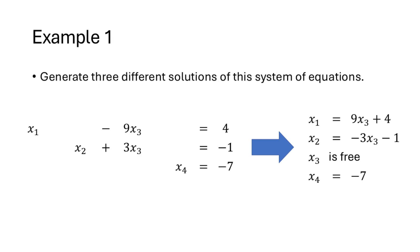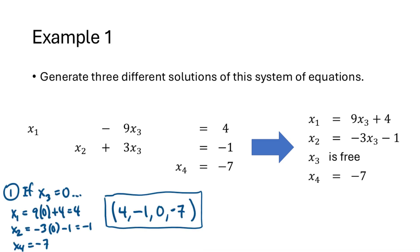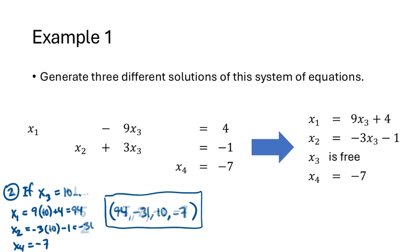Now we can use this general solution to generate specific solutions of the original system of equations. For example, if we choose x3 equals 0, then this generates the solution (4, -1, 0, -7). If instead we choose x3 equals 10, then we get the specific solution (94, -31, 10, -7). And if we let x3 be negative 1, that gives us the solution (-5, 2, -1, -7). Whenever we have one or more free variables, any value of those free variables will generate a specific solution. So when we have a free variable, we're going to have infinitely many solutions.